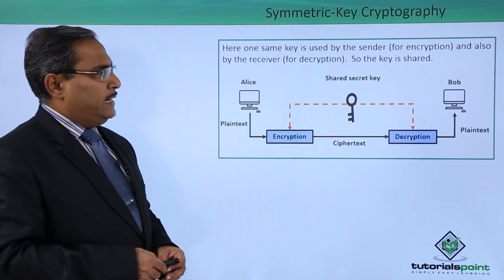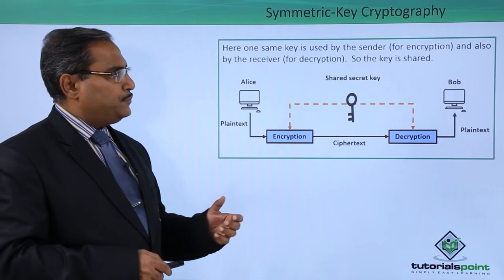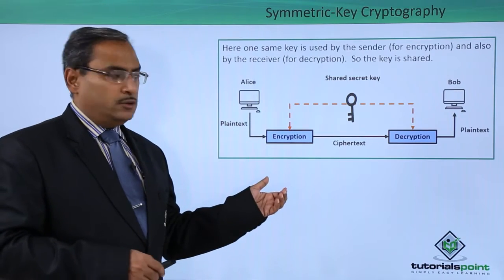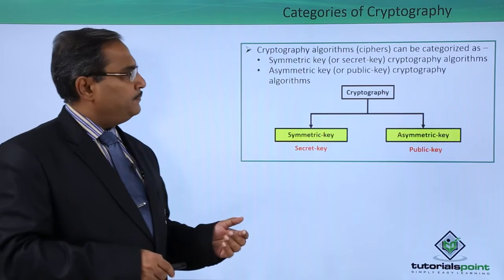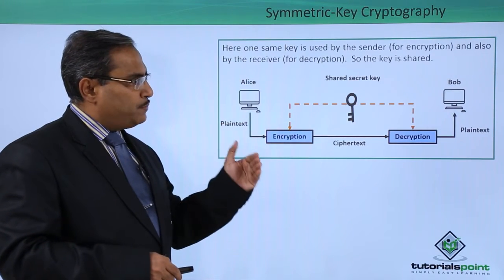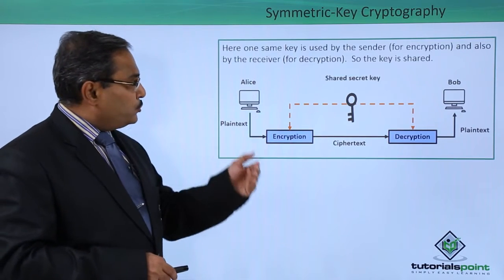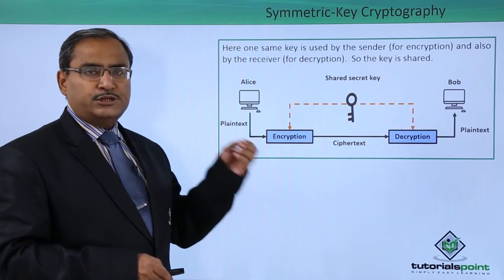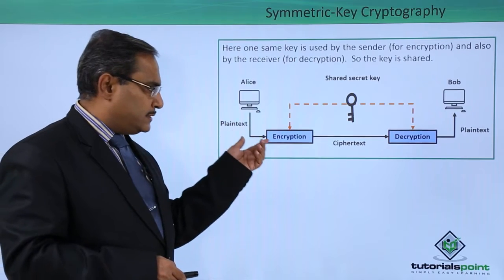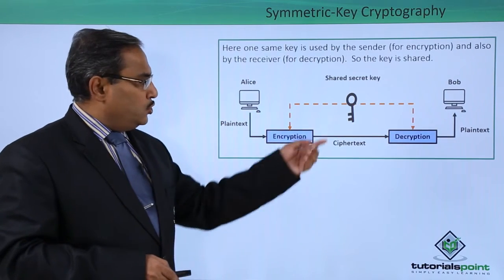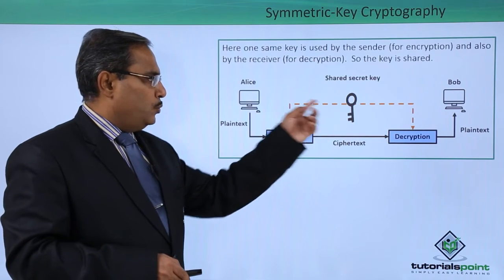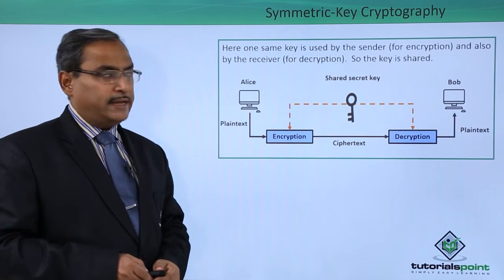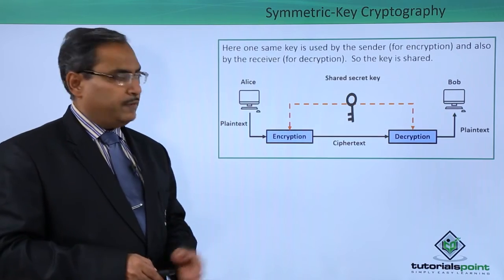In symmetric key cryptography, one same key is used by the sender for encryption and also by the receiver for decryption. The key is shared — this is the shared secret key used for both encryption and decryption. Through the media, the cipher text is sent. This is the basic idea of symmetric key cryptography.